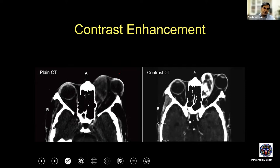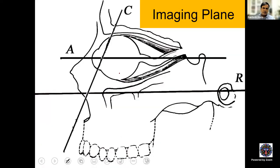You should ask for contrast enhancement if you are looking for a vascular lesion or want to know the blood supply. For an orbital fracture, contrast is obviously not required. But for a vascular tumor, contrast CT scan gives a lot of information about the vascularity of the lesion and surgical implications. For imaging plane, you have to ask for axial, coronal, and if needed, sagittal reconstruction. Axial is parallel to the orbit, whereas coronal is at about 70 to 75 degrees — angled to avoid artifacts from metallic dental fillings.